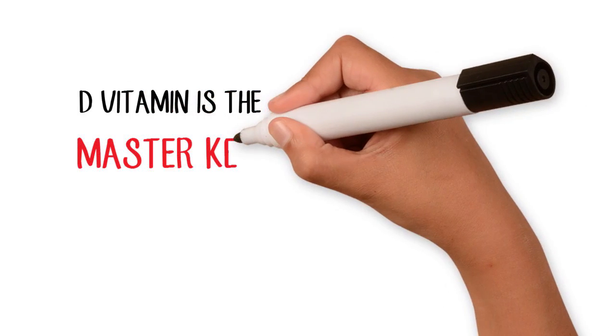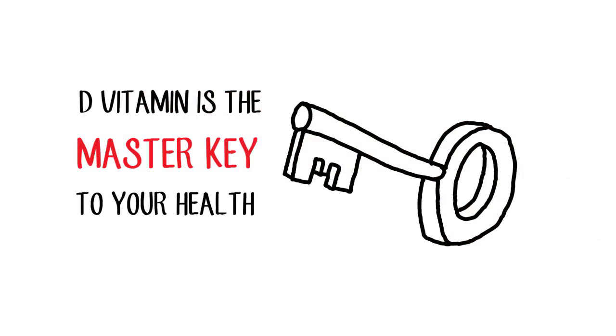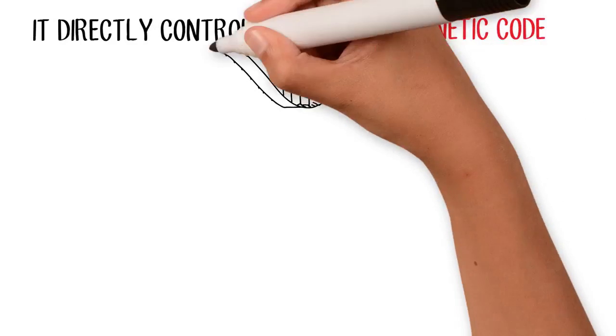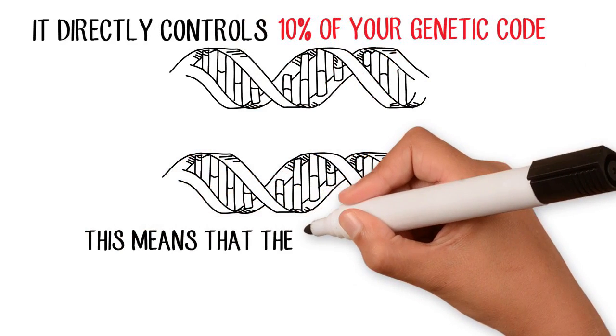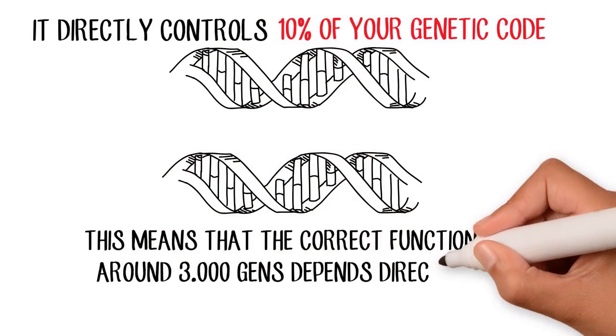D-vitamin is the master key to your health. It directly controls 10% of your genetic code. This means that the correct functioning of around 3,000 genes depend directly on it.